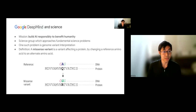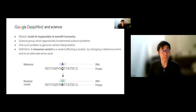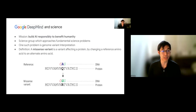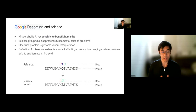Google DeepMind is a unit inside of Google whose mission is to build AI responsibly to benefit humanity. As part of that mission, we have a group dedicated to science, applying AI and machine learning to fundamental science problems. One such problem is the problem of genome variant interpretation, and there are many different kinds of genetic variants. The focus of today's webinar will be on missense variants.